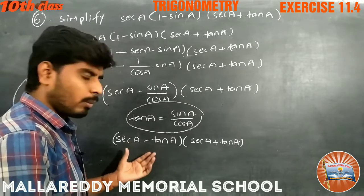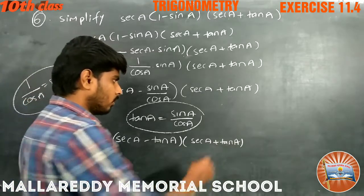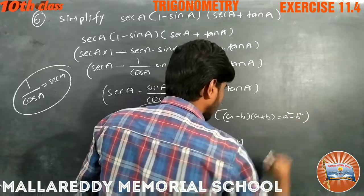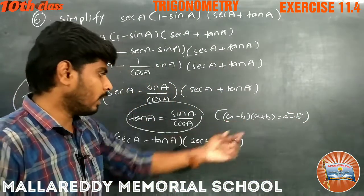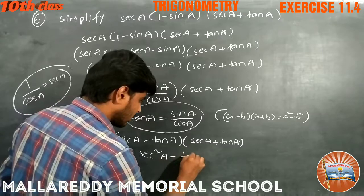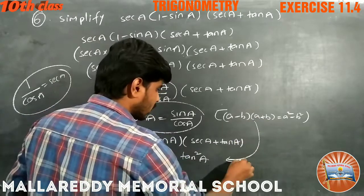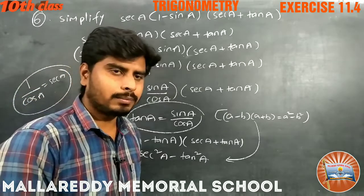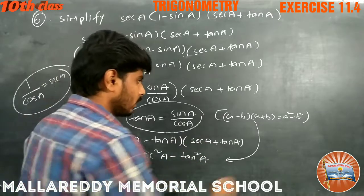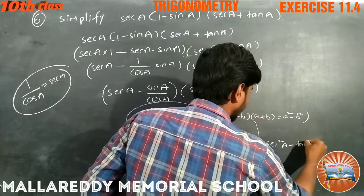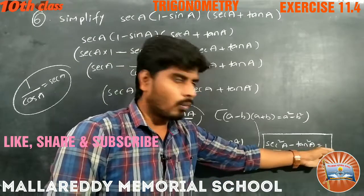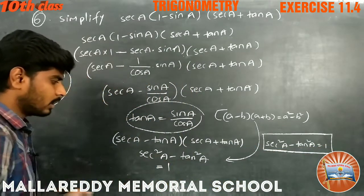So this is nothing but in the form of a minus b into a plus b. The formula is: a minus b into a plus b equals a square minus b square. In place of a we have secant a, and in place of b we have tan a. So we get secant square a minus tan square a. We have the identity: secant square a minus tan square a equals 1. So in place of secant square a minus tan square a, we replace 1. It becomes 1 — that is the answer, this is the simplification.